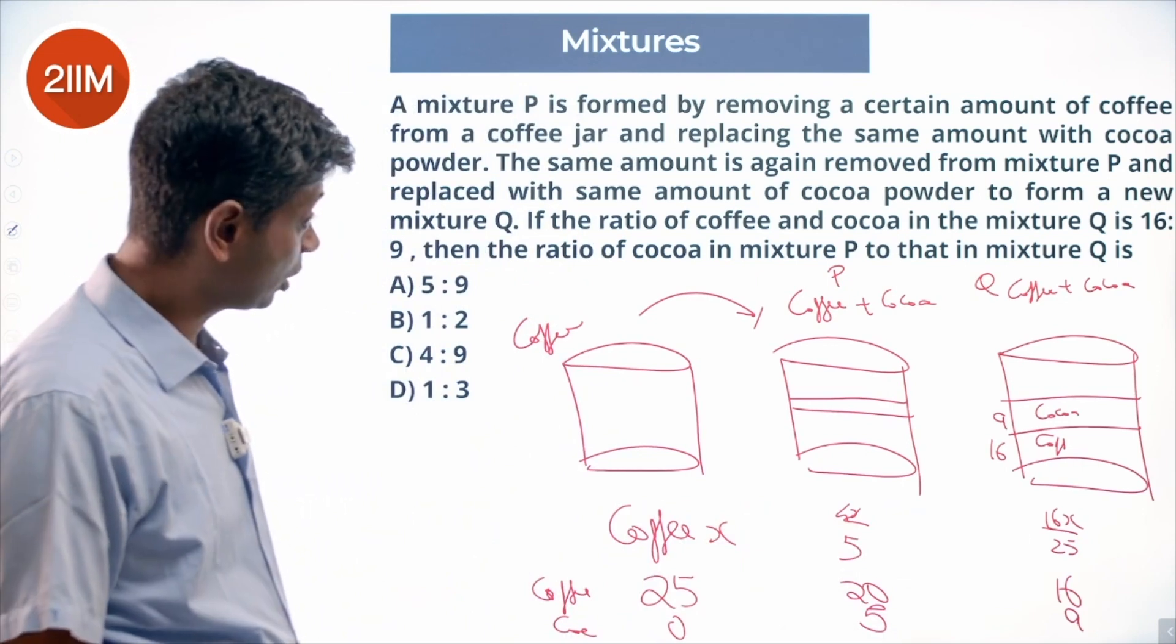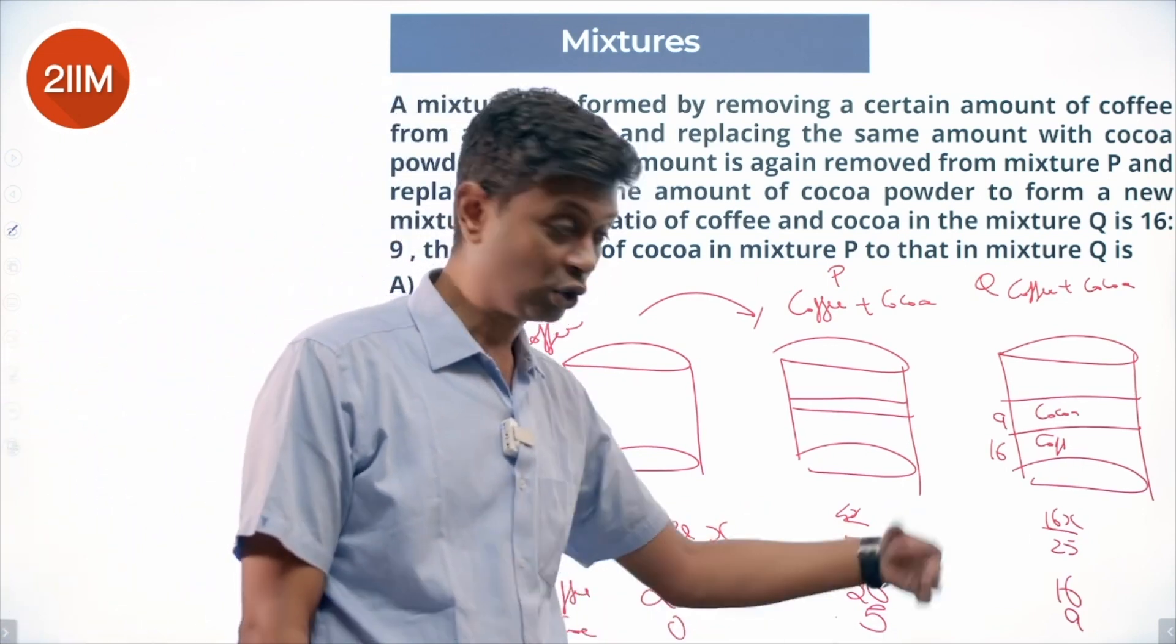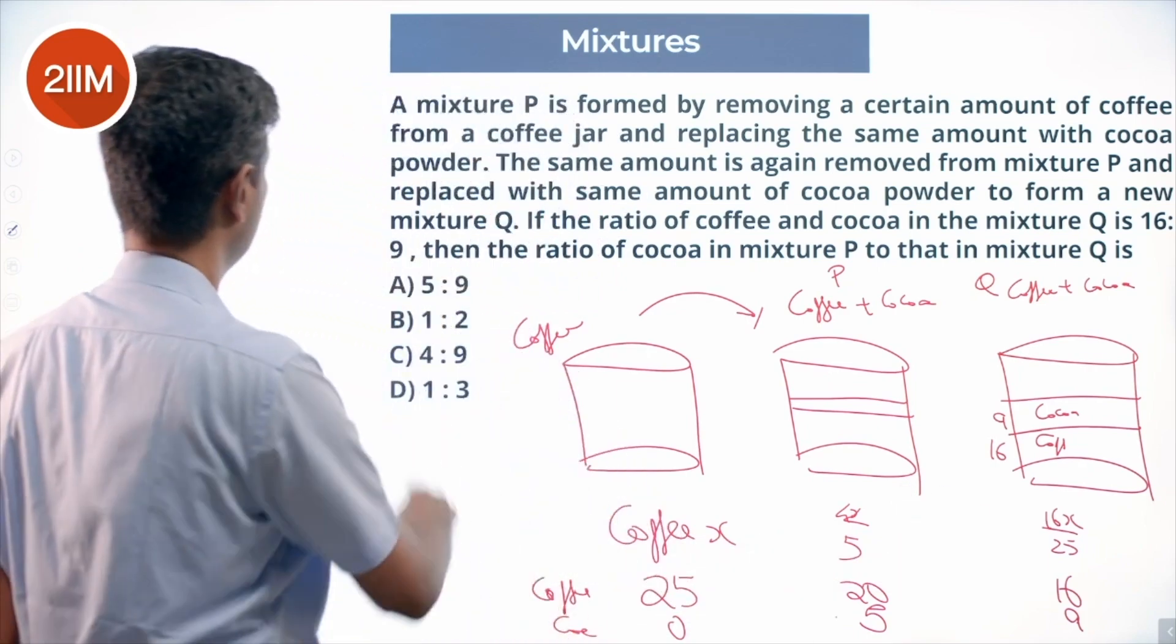Then the ratio of cocoa in mixture P to mixture Q - cocoa in mixture P is 5, mixture Q is 9. 5 is to 9. That is the answer.